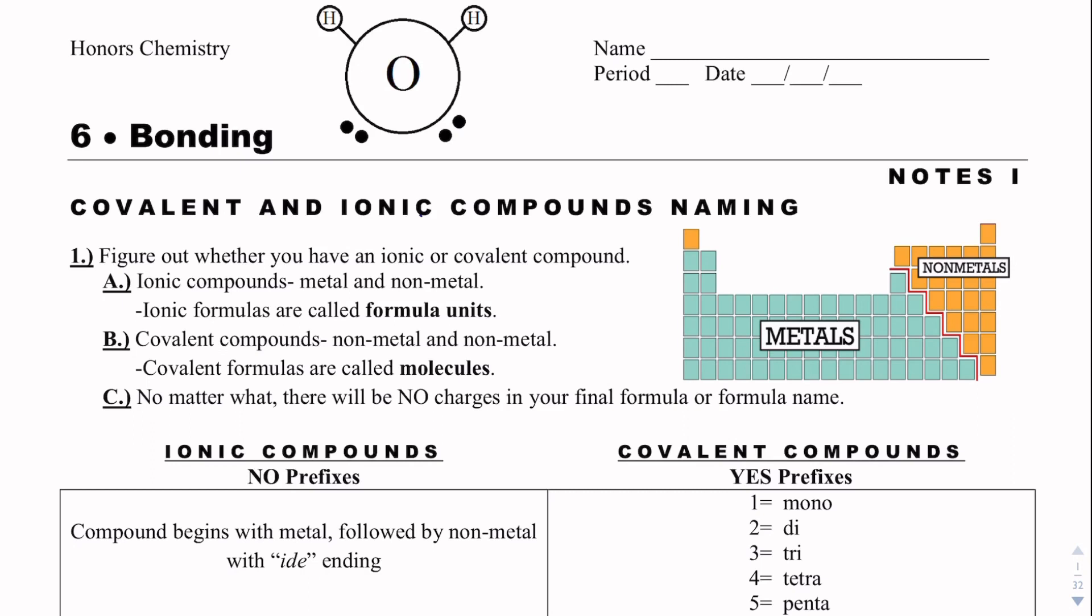So when we name ionic and covalent compounds, the first thing we need to do is figure out if they're ionic or covalent. If we look at this picture here, we have our periodic table, and on your periodic table you should see your bold line stair step, and that separates your nonmetals from your metals. Ionic compounds are metals and nonmetals. We call these formula units. This is where we crisscross. That's what a lot of people did in Unit 3. That's where we crisscross our charges.